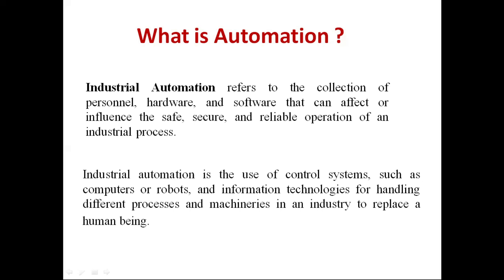Obviously, if it is a process, there are a large number of inputs and outputs which need to be handled, and also when we talk about sequential logic which is basically in machinery. In this way, industrial automation is helping us to replace most of the human beings through machines. All the work is done automatically, so direct instruction of human beings with machines is eliminated.